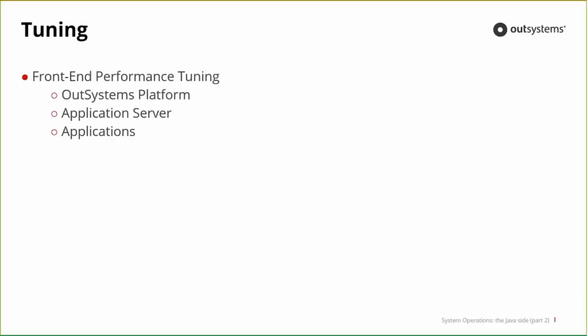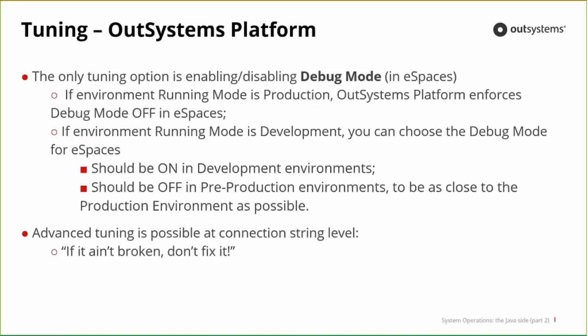In terms of tuning the platform, we can tune the platform itself, the application server, and of course the applications — developers can tune the code. In terms of the platform, the only real tuning possible is enabling or disabling debug mode in the eSpaces. If you're running in production mode and the license is set to production, this is off by default. Unless you go there yourself and change the eSpaces to be on, it's disabled — you cannot debug in production.